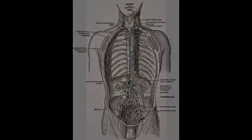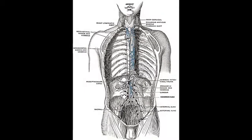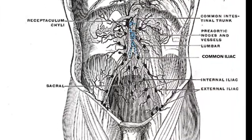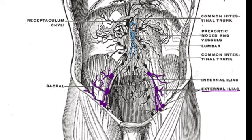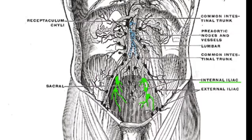Now let's look specifically at drainage patterns of the pelvis and perineum. Most organs of the pelvis and perineum drain lymph into one of three nodes, known as the external iliac nodes, internal iliac nodes, or the sacral nodes.